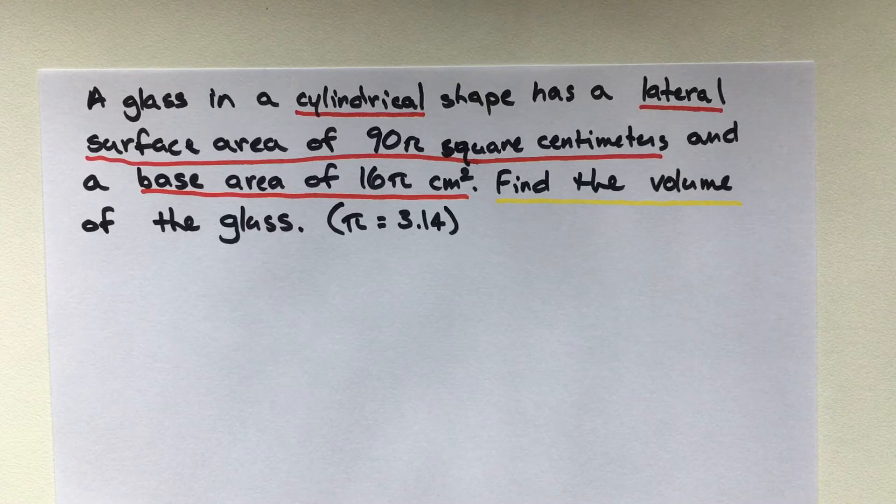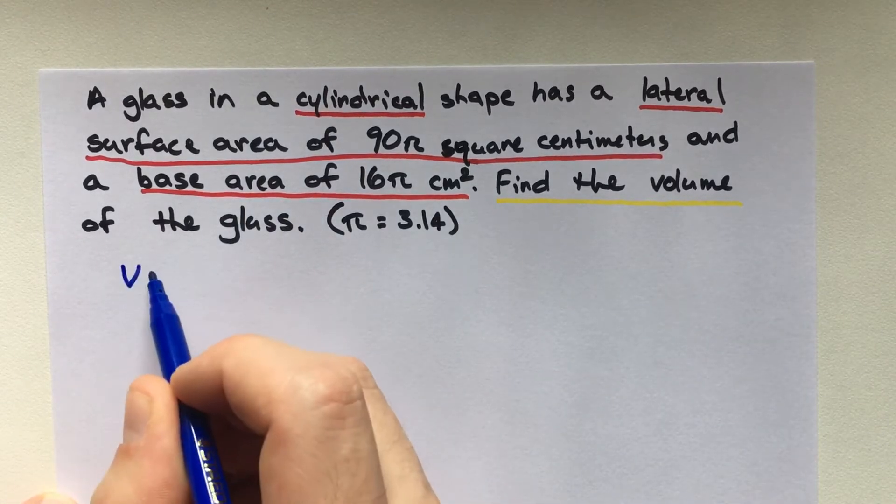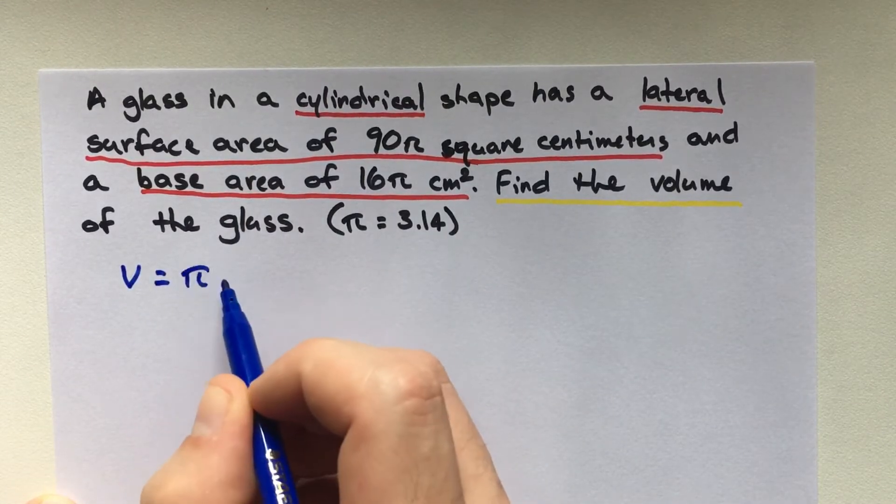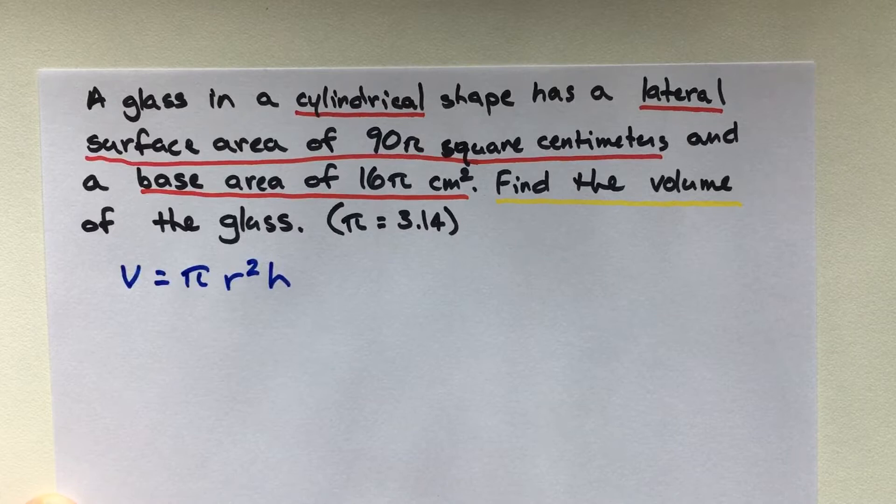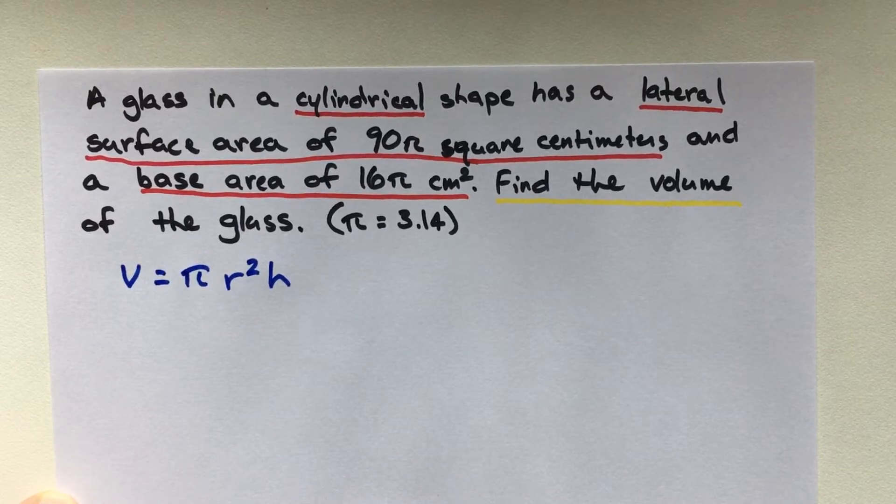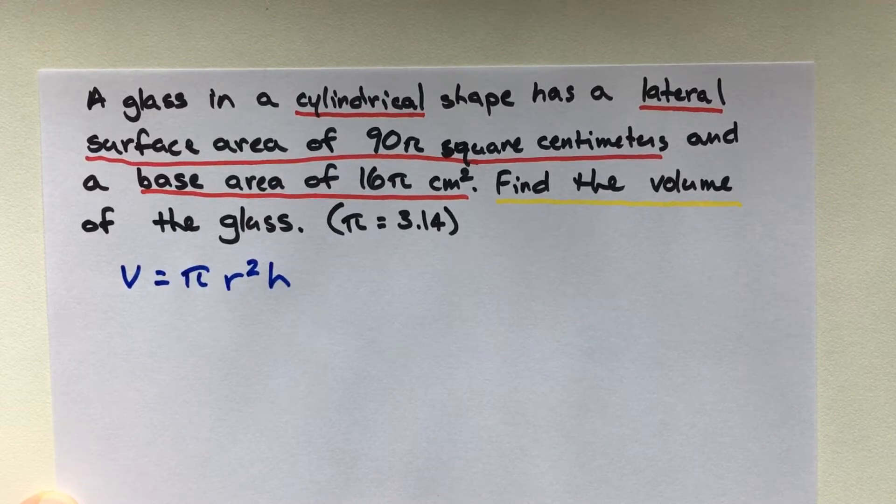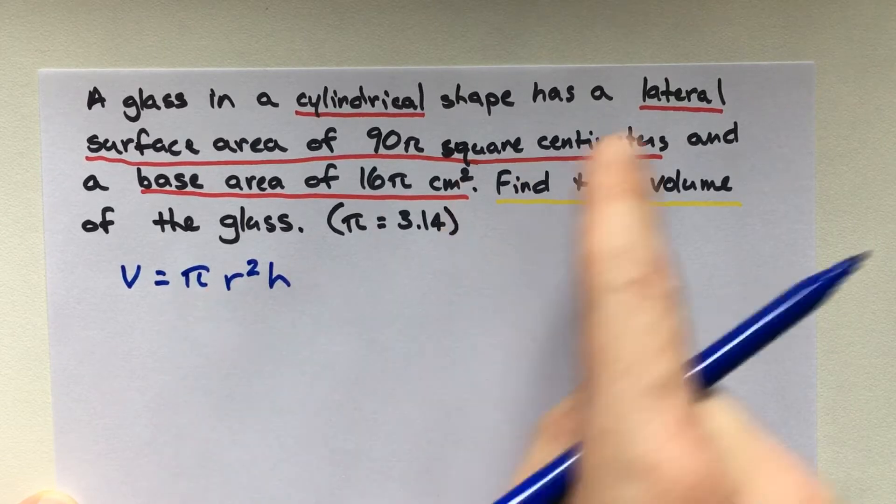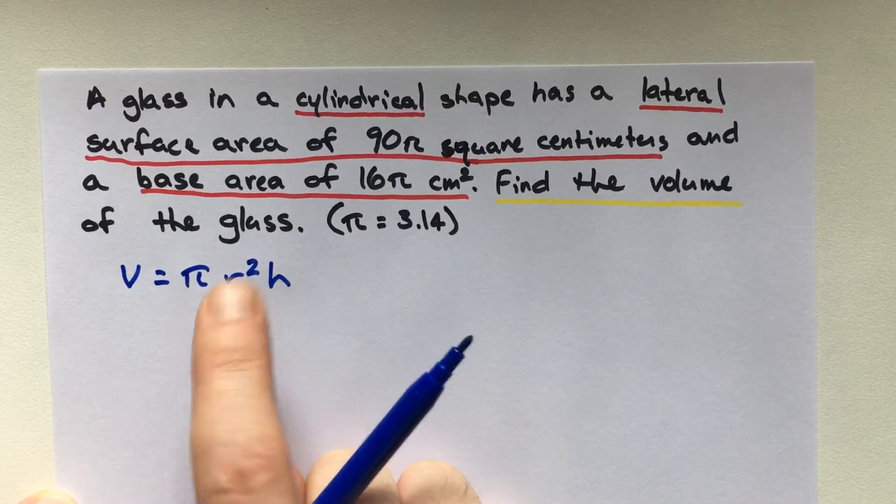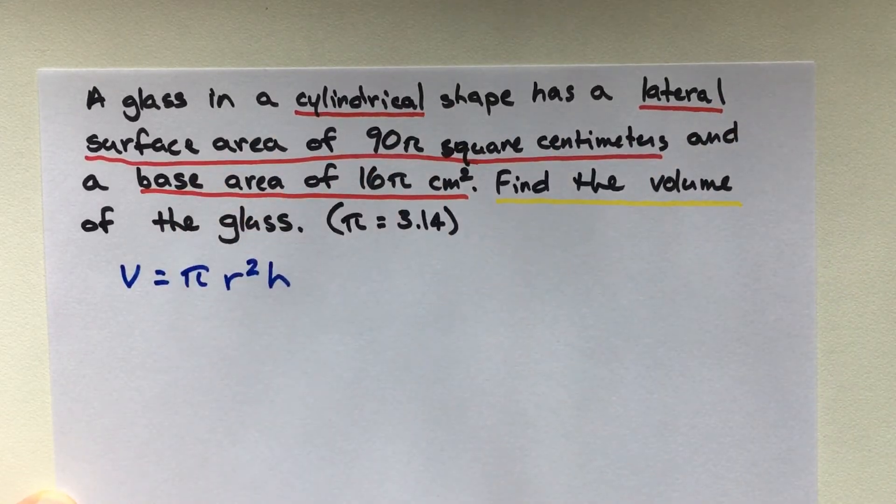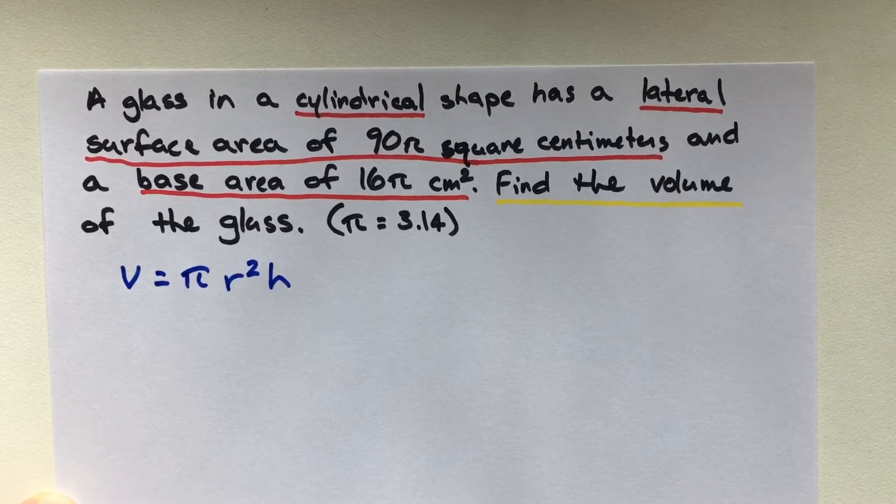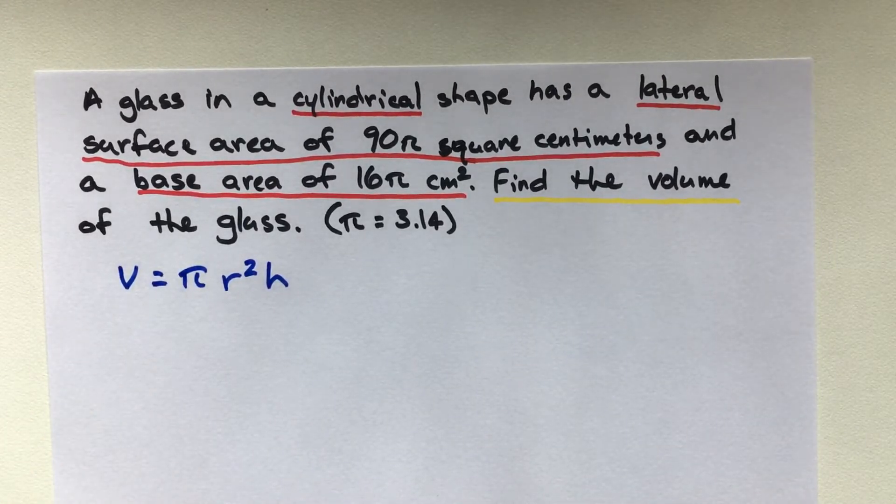So, the volume of a cylinder, as we know from our previous videos, volume is equal to π times radius squared times height. So, what we know really doesn't help us with our end result at the moment. Nowhere in our question does it give us our radius. Nowhere does it give us our height. But we know the lateral surface area, and we know the base area, and we know the formulas for both of those. So those can definitely help us find our radius and our height.